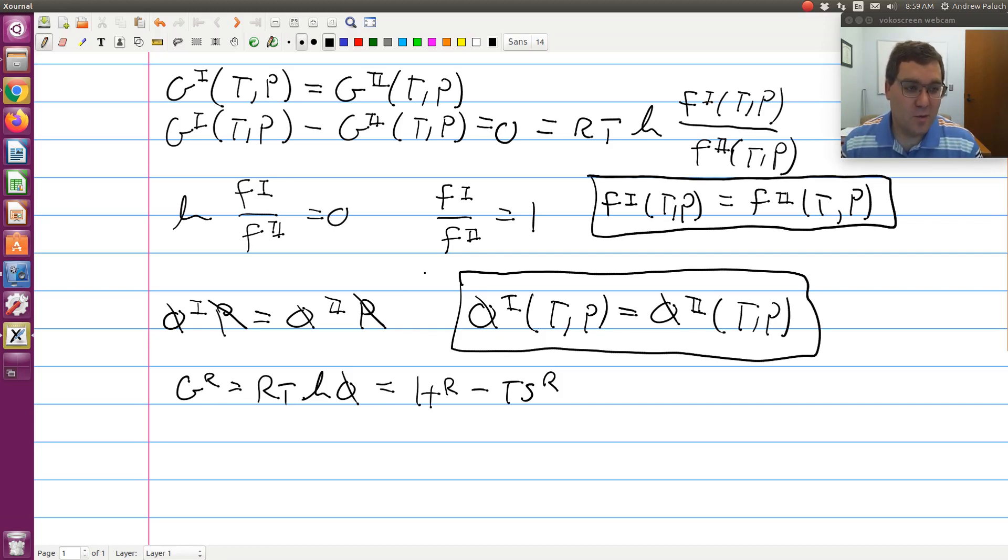So when I specify T,P along with TC, PC, and omega into my equation of state calculator, out comes GR. And so I can keep iterating on P until GR, or phi, of phase 1 and phase 2 are equal. So now I have a means in which I can directly calculate a phase coexistence using a cubic equation of state.